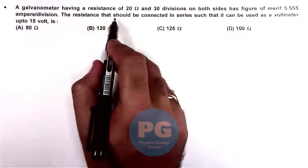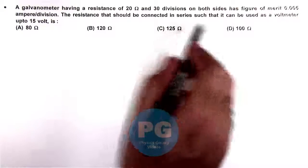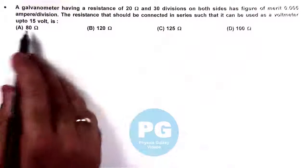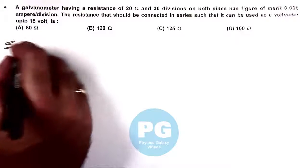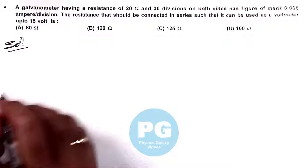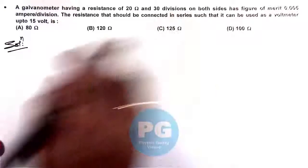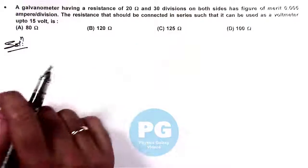It is asking the resistance that should be connected in series such that it can be used as a voltmeter up to 15 volts. So here in solution we can analyze if we are having a galvanometer of which 30 divisions are there on both sides of 0.